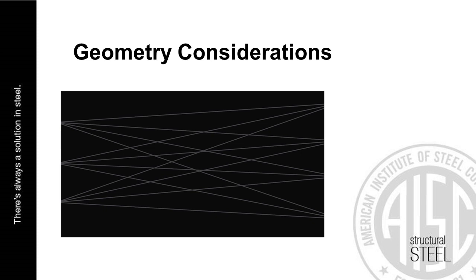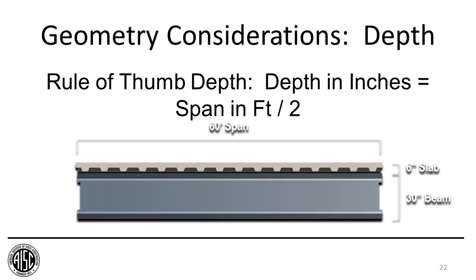After establishing your strength and serviceability criteria, you move into determining the geometry of your truss. First, we want to talk about depth and what is an appropriate depth for a long-span structure. For floor beams and girders, we typically have a rule of thumb: the span in feet divided by two determines your structural depth. So for a 60-foot span, you typically get a three-foot structural depth, which generally results in an economical and serviceable design.